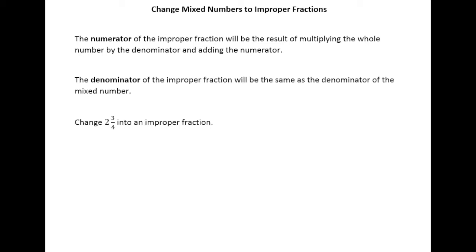So first let me just give the rule for how to do this and then we'll talk about the why. The numerator of the improper fraction will be the result of multiplying the whole number by the denominator and adding the numerator.